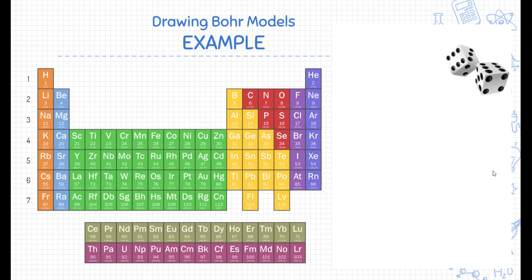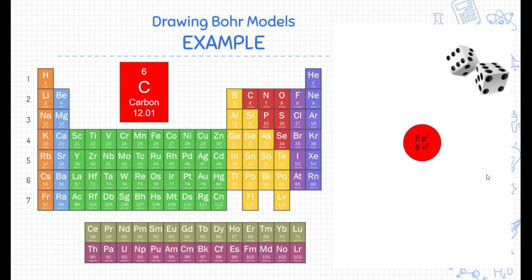All right. So let's go ahead and try an example. Let's deal with carbon. If you remember, carbon has a lot of information on the periodic table. We already know that it has six protons and six neutrons from our previous example.